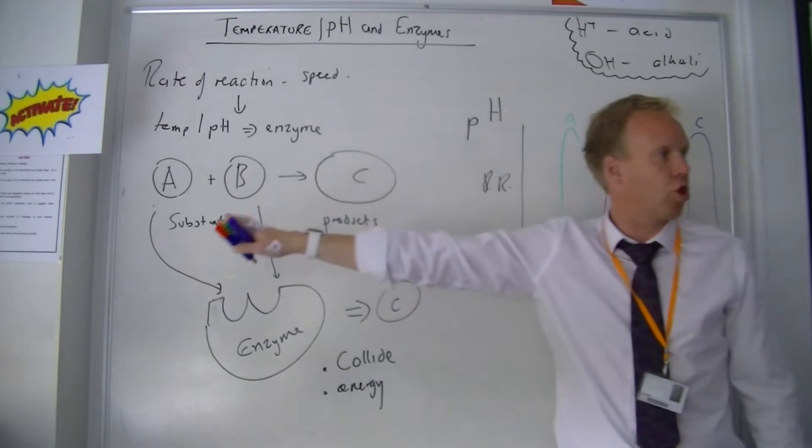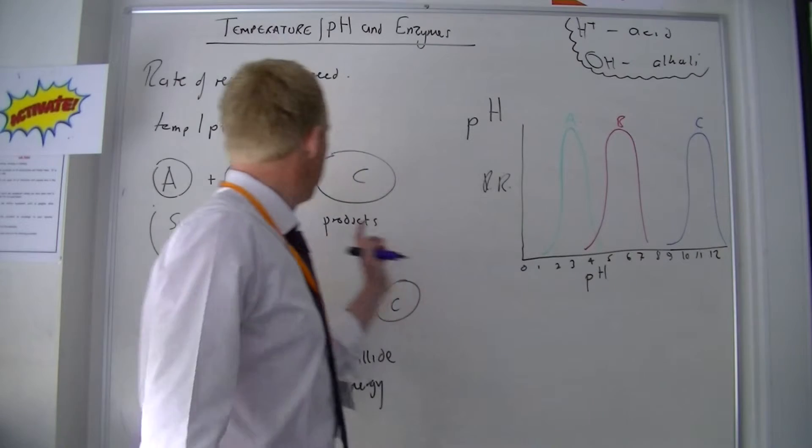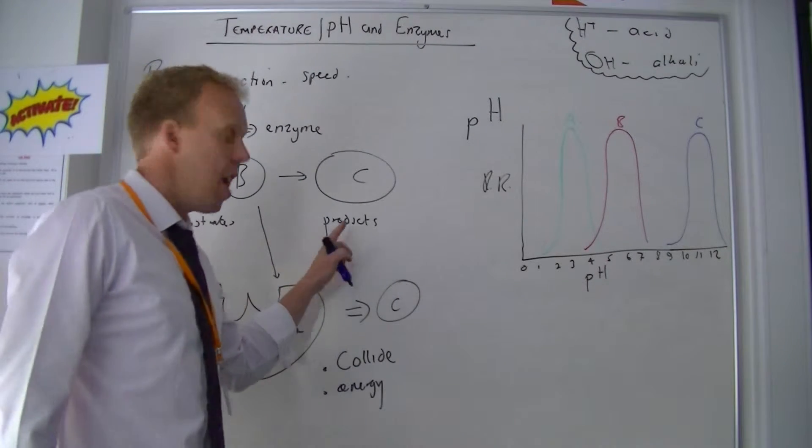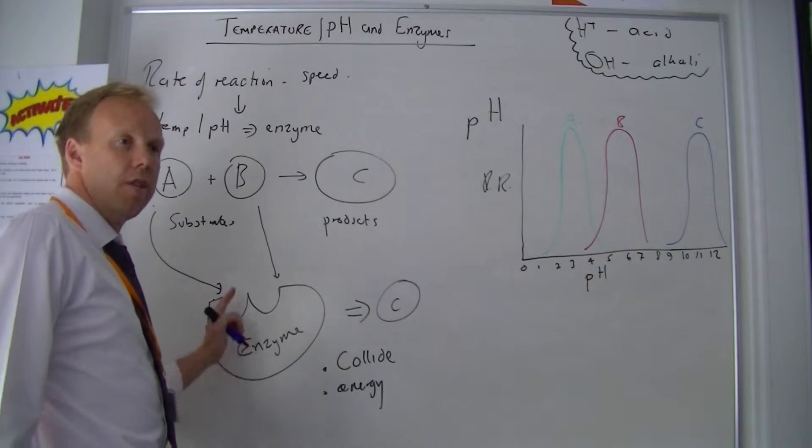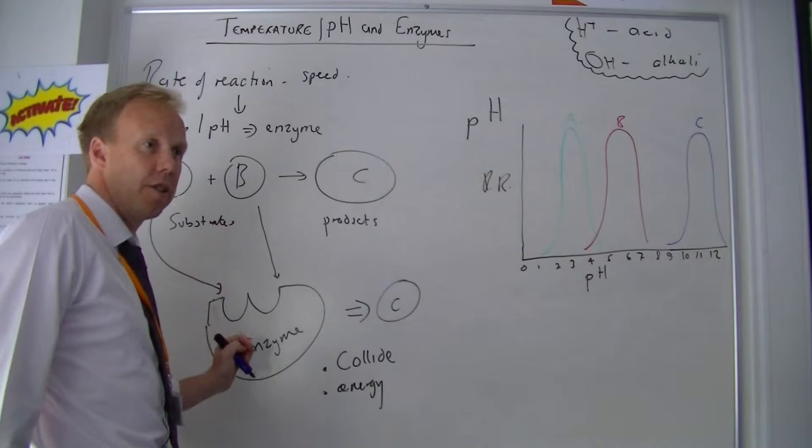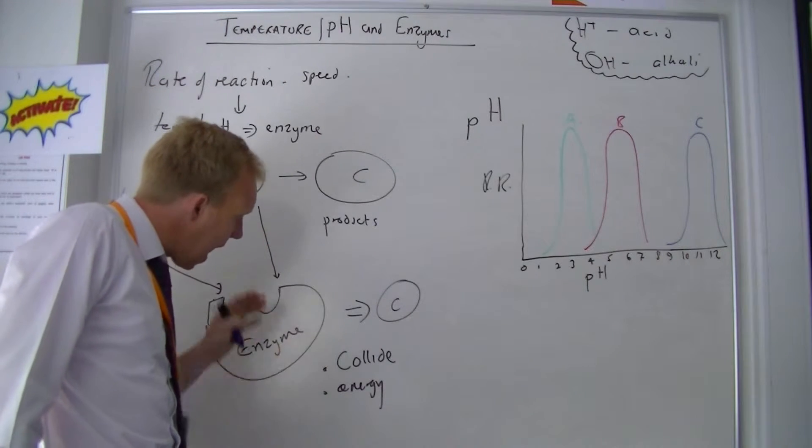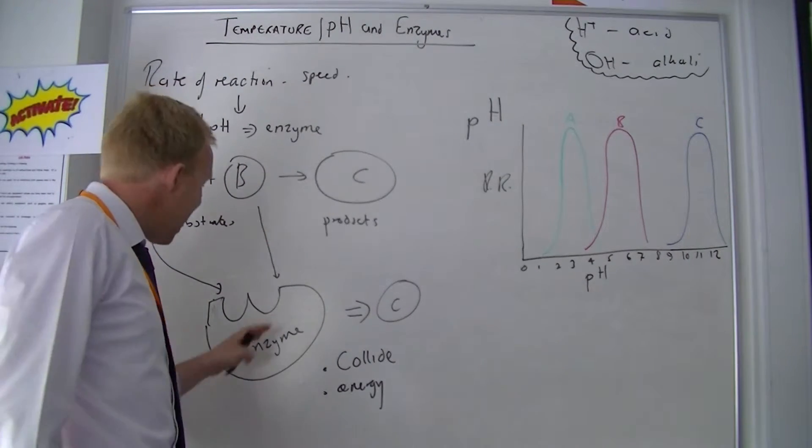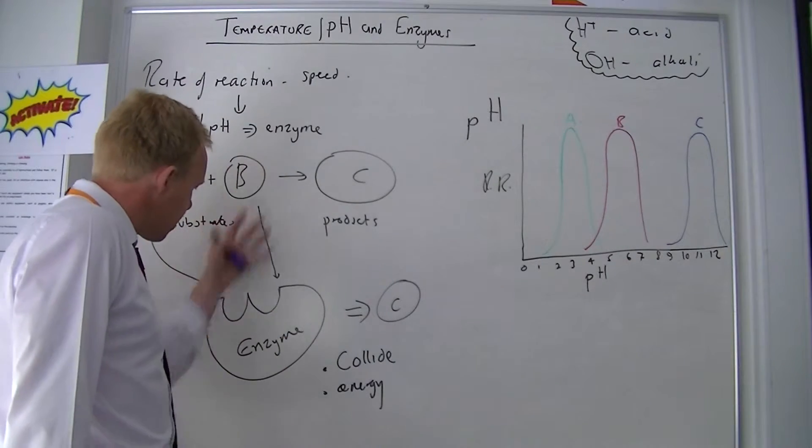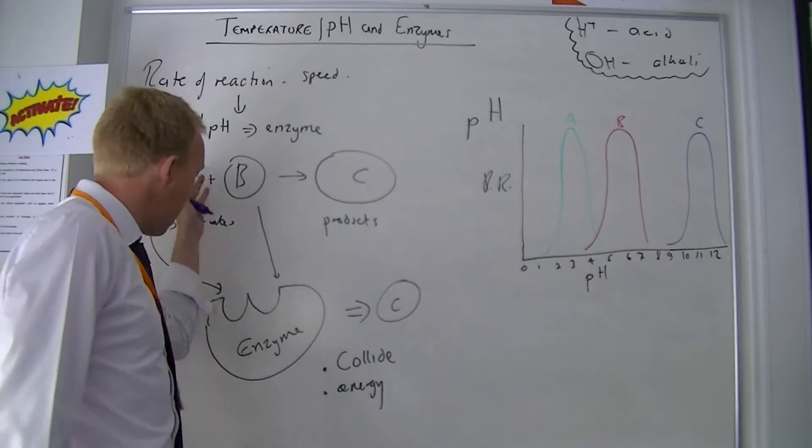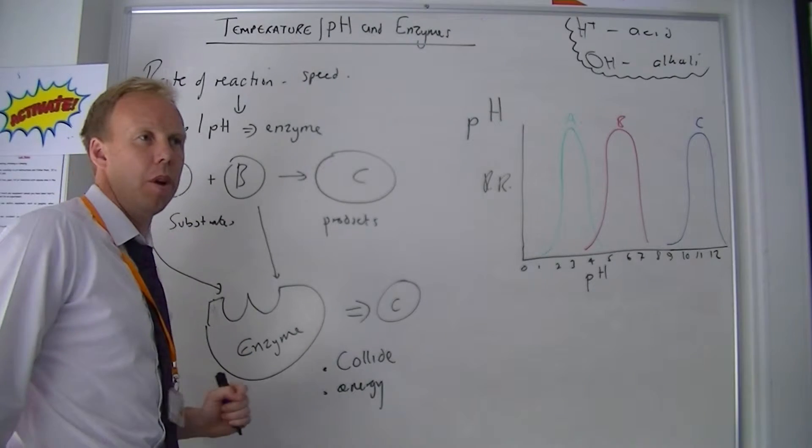makes C. A is the substrates and C is the products. And the concept goes that A and B will react when they collide with enough energy. The enzyme makes that process easier by bringing the two products together.